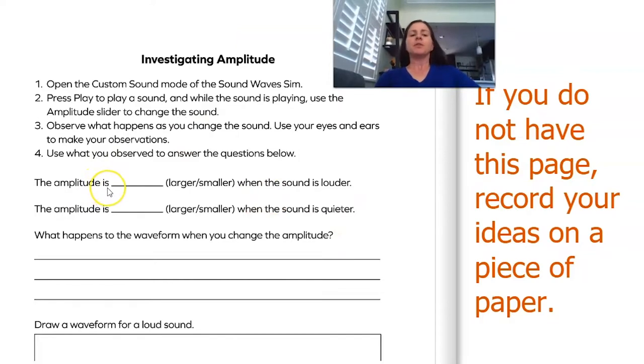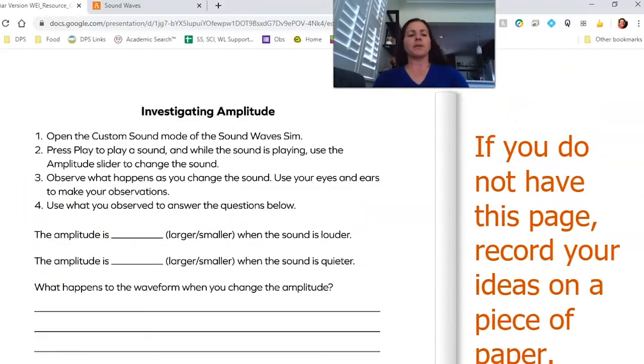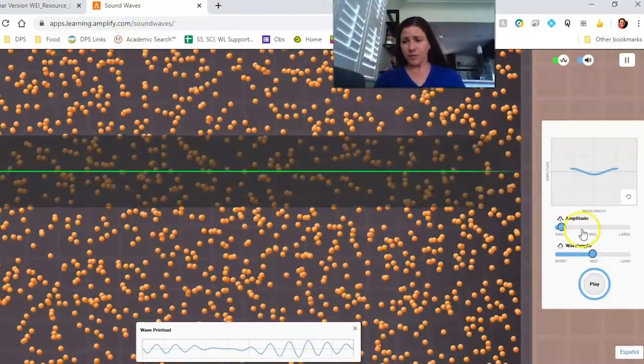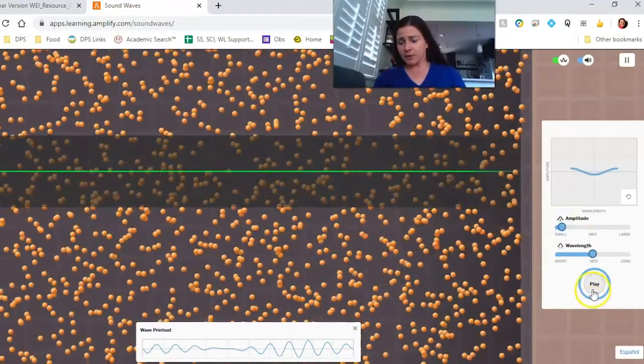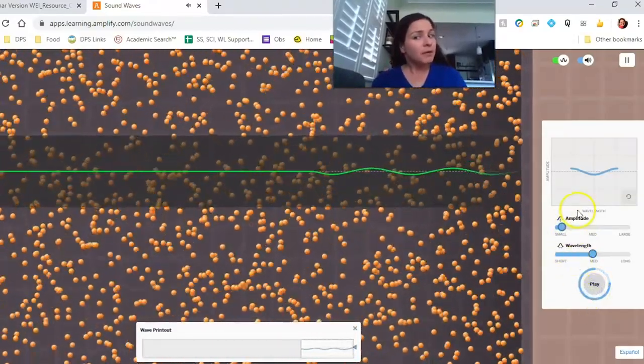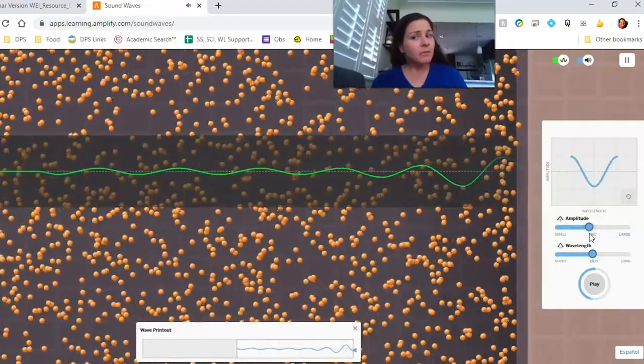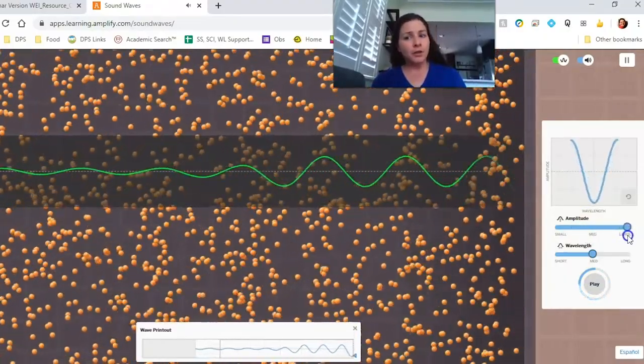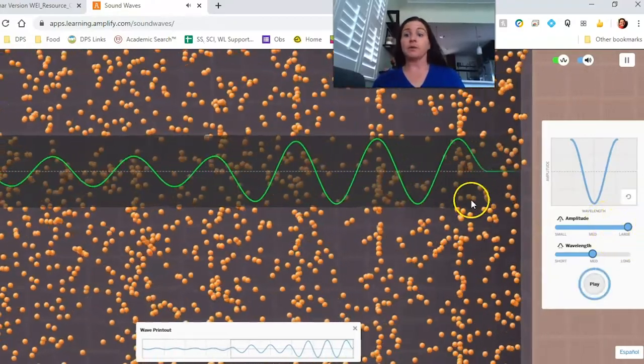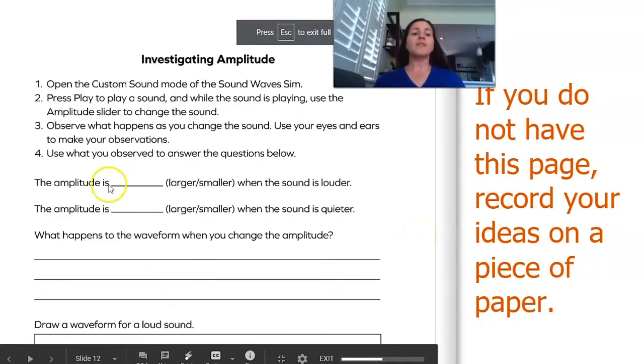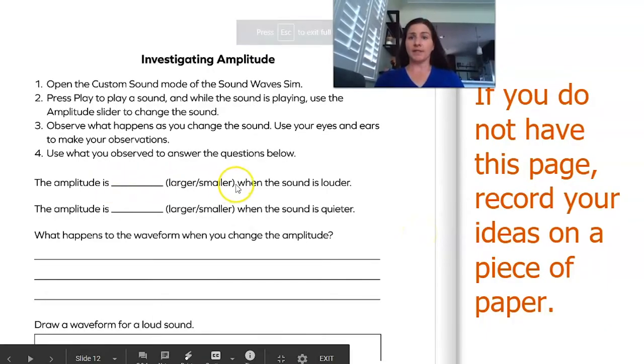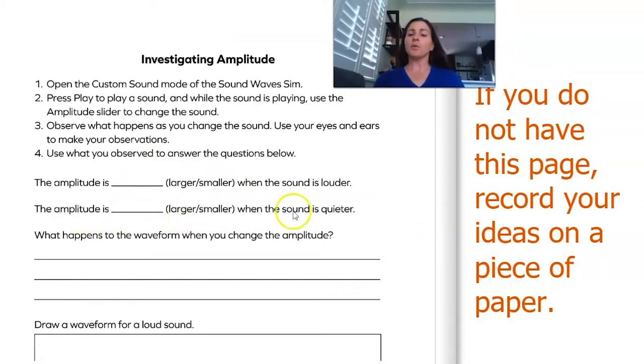So the amplitude is larger or smaller when the sound is louder. And then the amplitude is larger or smaller when the sound is quieter. Well, we actually saw that pretty clearly. Like right now, I've got the amplitude set really small. I can barely hear that. Medium, louder, large. It's very loud. So to me, I see the amplitude is larger when the sound is louder. The amplitude is smaller when the sound is quieter.